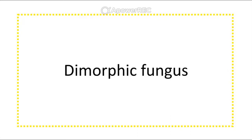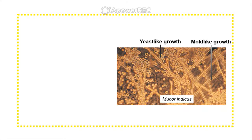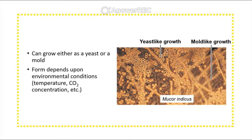Dimorphic fungi have either yeast-like growth — single-celled organisms — or mold-like growth where they grow hyphae. They are often implicated in pathogenic organisms, and the form usually depends on environmental conditions such as temperature, CO2, and oxygen availability.